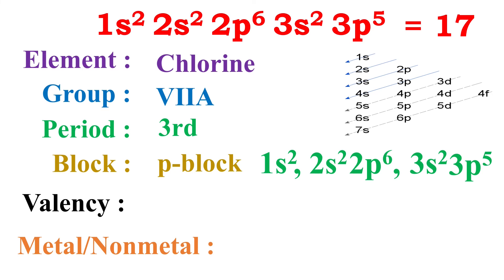Now, what is the valency of this element? The outermost shell contains 7 electrons. When it takes part in a chemical reaction, either it has to donate these 7 electrons to another or it has to gain 1 electron to form an octet. Donating 7 electrons is not possible, so it gains 1 electron in the chemical reaction. The number of electrons which an atom gains, loses, or shares in a chemical reaction represents its valency. That's why its valency is 1.